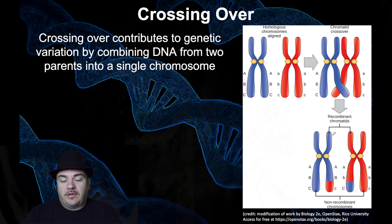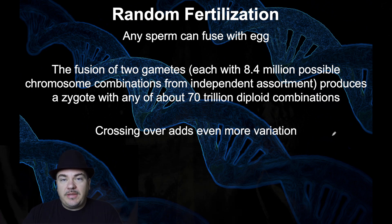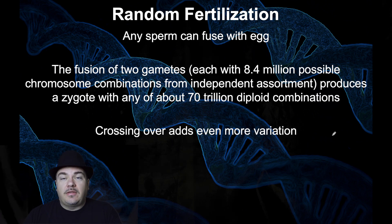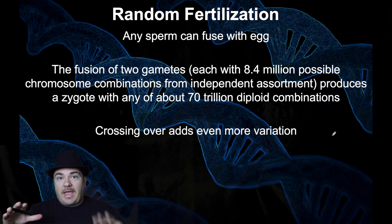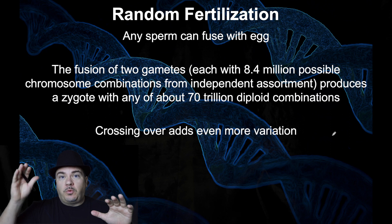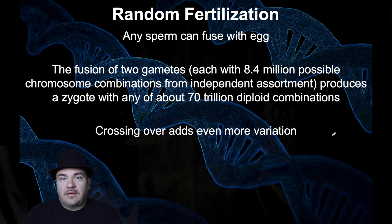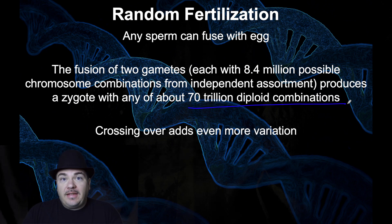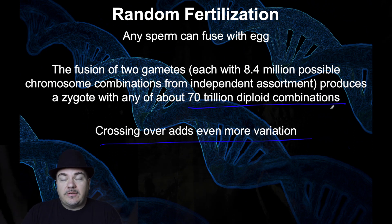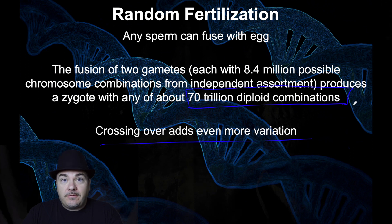The third way we get genetic variation through sexual reproduction is from random fertilization — any sperm cell can fertilize any egg cell. A biological male can make 8 million different types of sperm cells due to independent assortment, and a biological female can make 8 million different types of egg cells due to independent assortment. Any one of these 8 million can combine with any one of the other 8 million. Take those two probabilities — one out of 8 million and one out of 8 million — and combine them. That means that couple can make 70 trillion different combinations, and that is just from independent assortment and random fertilization — not even including crossing over. That is obviously an enormous amount of genetic variation.